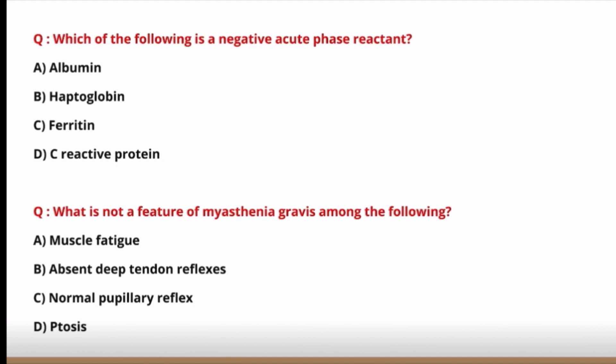Next question: what is not a feature of myasthenia gravis — muscle fatigue, absent deep tendon reflexes, normal pupillary reflex, or ptosis? Muscle fatigue is the most common symptom; ptosis is also very common. In myasthenia gravis there is no pupillary defect — normal pupillary reflex is a feature. Deep tendon reflexes are preserved, not lost. Absent deep tendon reflex is not a feature of myasthenia gravis — that is the correct answer.